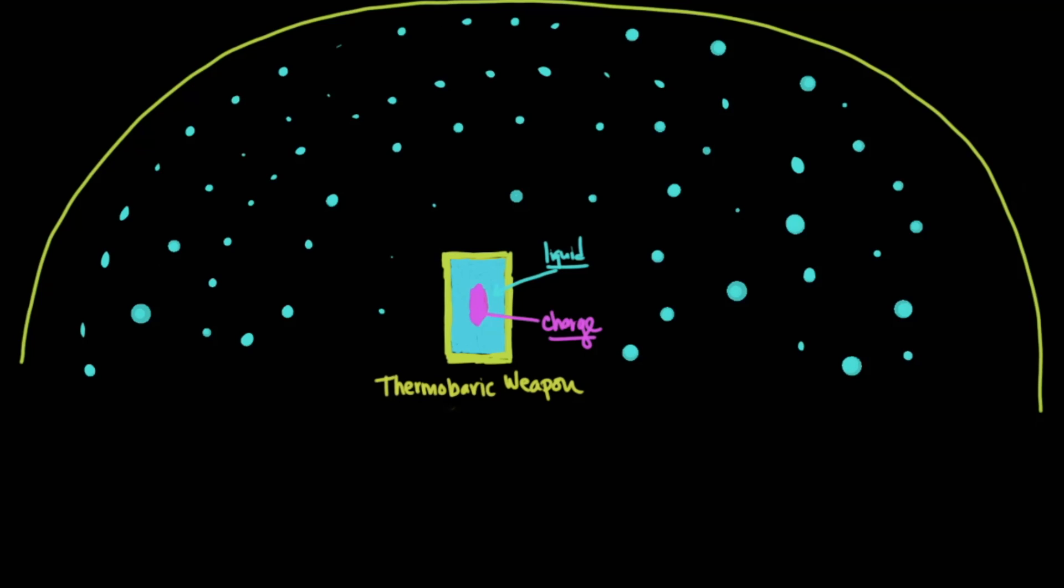With the air around the bomb saturated with this fuel mixture, there is another detonating charge that ignites this fuel and causes it to instantaneously combust, sucking the oxygen. Because combustion requires oxygen for the reaction to occur, it sucks all of the oxygen out of the atmosphere.